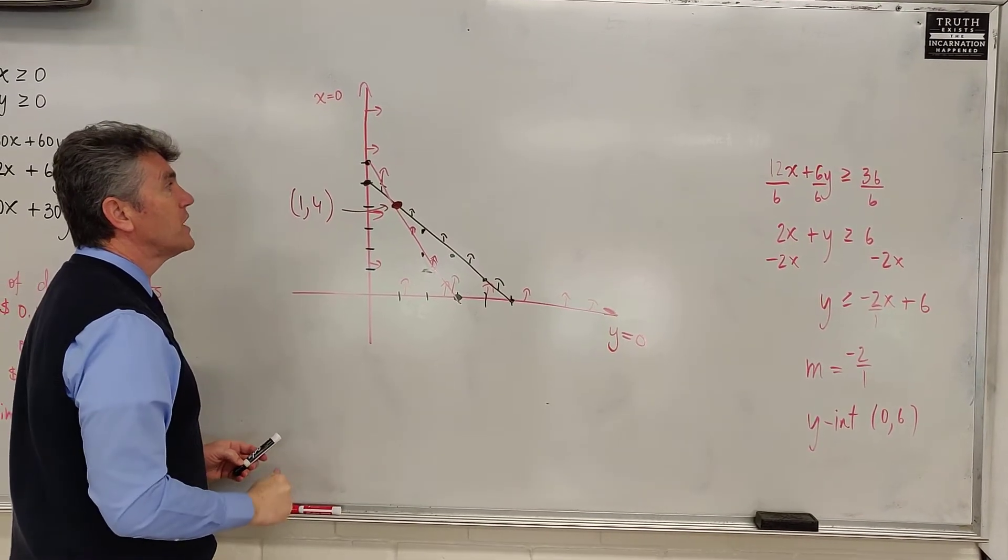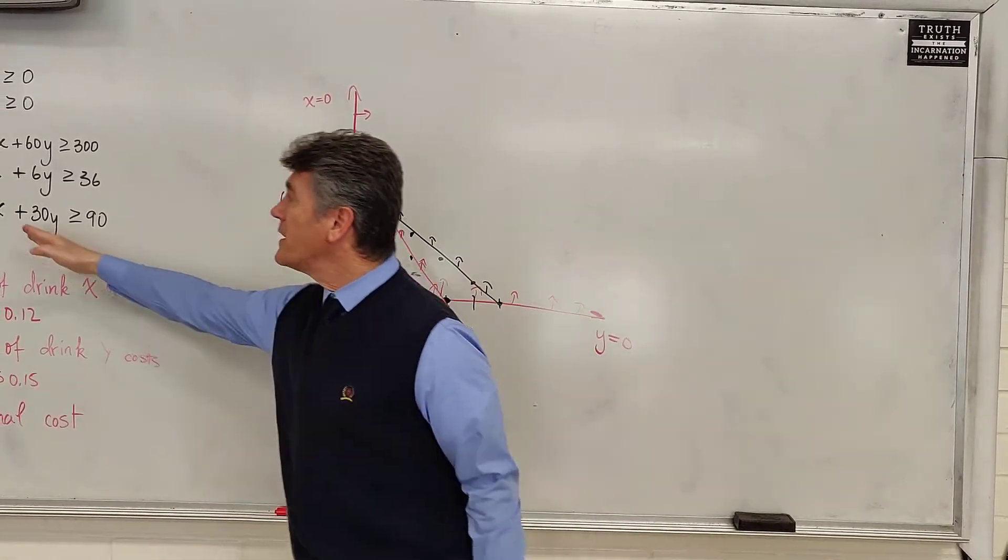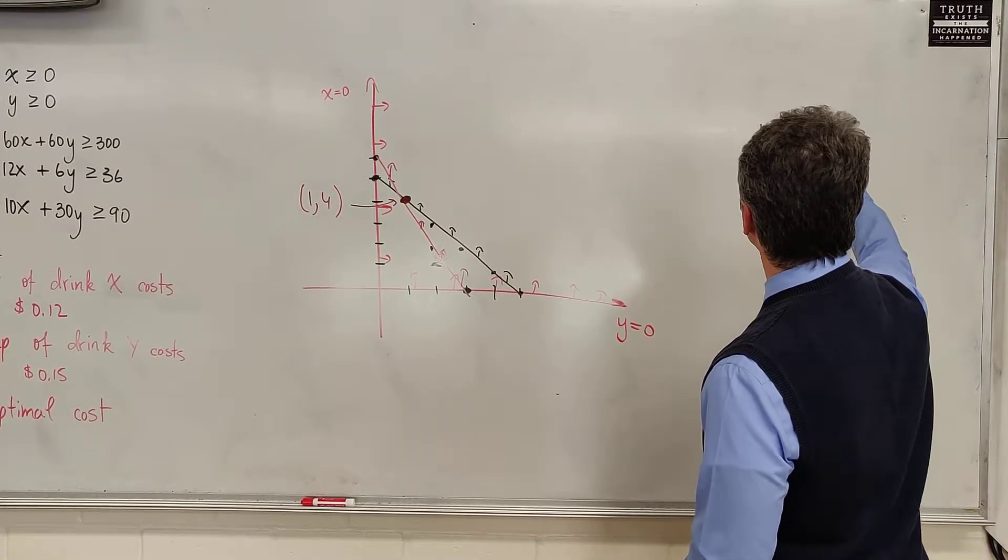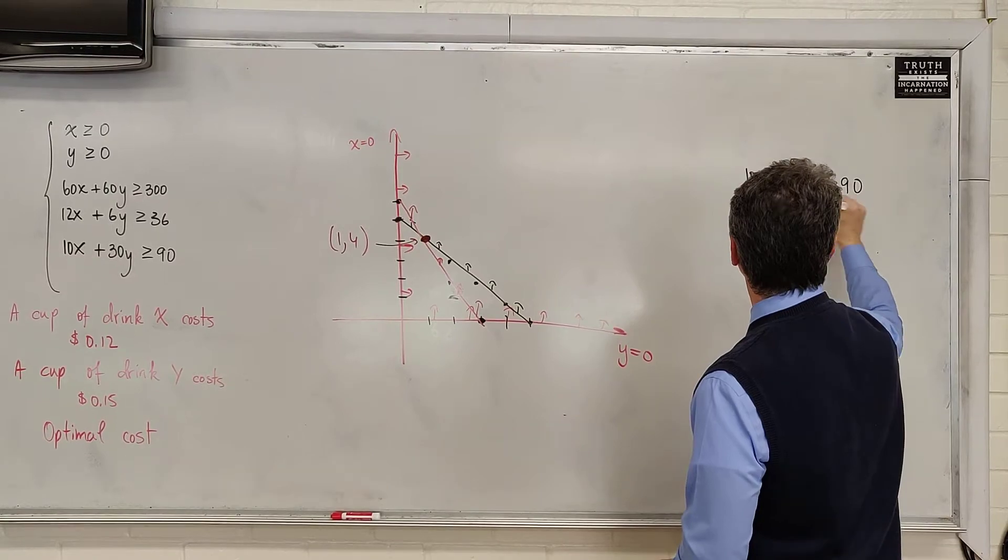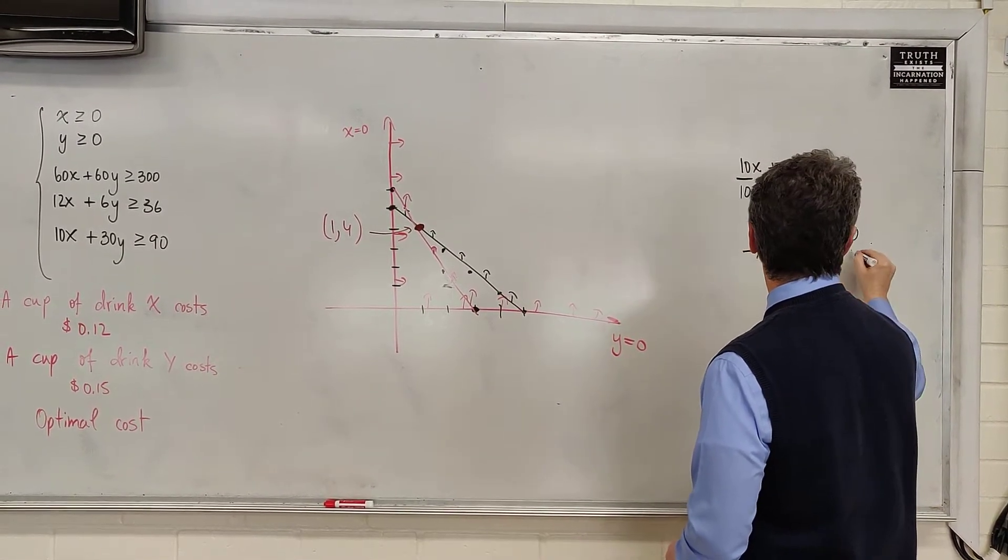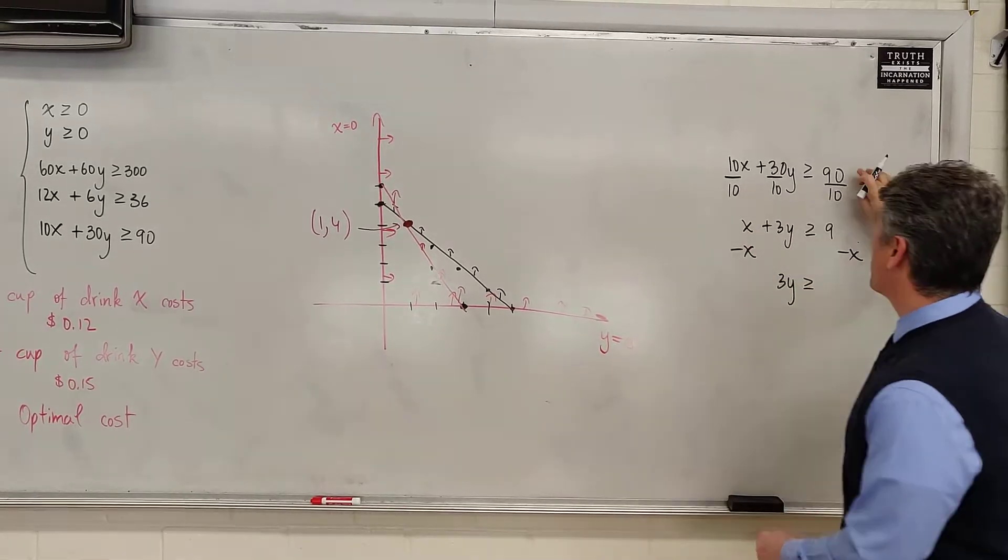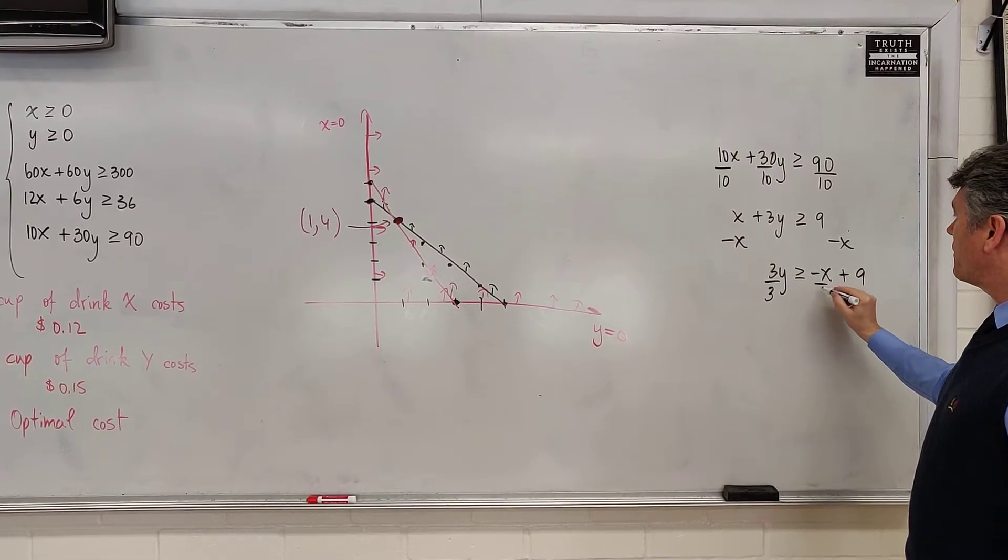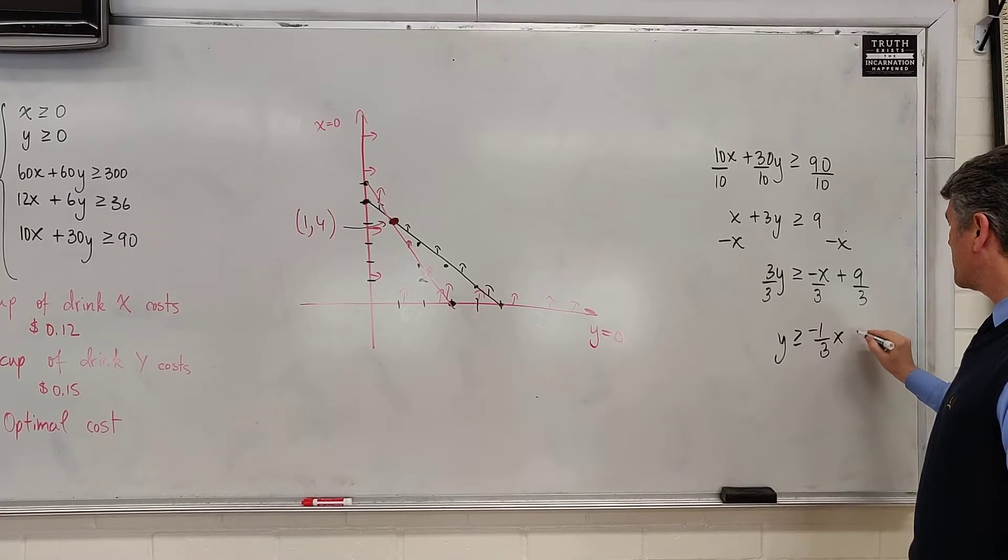We have one more line to go, and then we will be done. We look at the last line, and what do we notice? Everything is divisible by 10, so we're going to divide everything by 10. 10x plus 30y is greater than or equal to 90. Let's divide everything by 10. x plus 3y is greater than or equal to 9. Subtract x from both sides. 3y is equal to the opposite of x plus 9. Divide everything by 3. And we have y is greater than or equal to negative 1 third x plus 3.